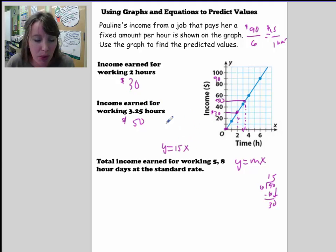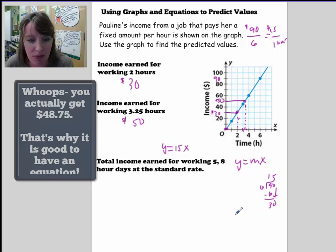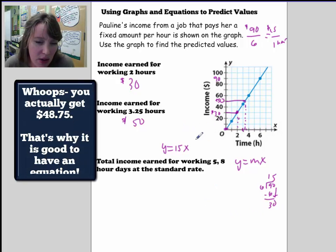So your equation is y is equal to 15x. Then I can put the 3.25 in here. So y is equal to 3.25x, and then you're going to get out 50. So that's another way of answering it in a more precise way.